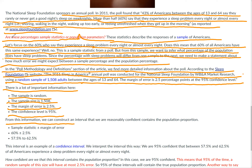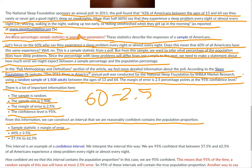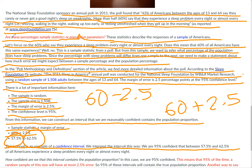From this information, we can construct an interval that we are reasonably confident contains the population proportion. The sample statistic plus or minus the margin of error — that's 60% plus or minus 2.5%. So you take 60% and subtract 2.5%, giving you the lower bound of 57.5%, and then you take 60% plus 2.5%, giving you the upper bound of 62.5%. This interval is an example of a confidence interval. We interpret the interval this way: we are 95% confident that between 57.5% and 62.5% of all Americans experience a sleep problem every night or almost every night.